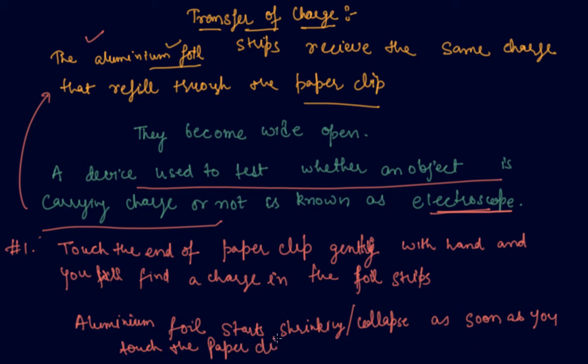Why does it happen, students? We can say that the foil strips are discharged because the charge from the aluminum foil comes in paper clip. Once the aluminum foil gets discharged it collapses down. This process is called as transfer of charge.